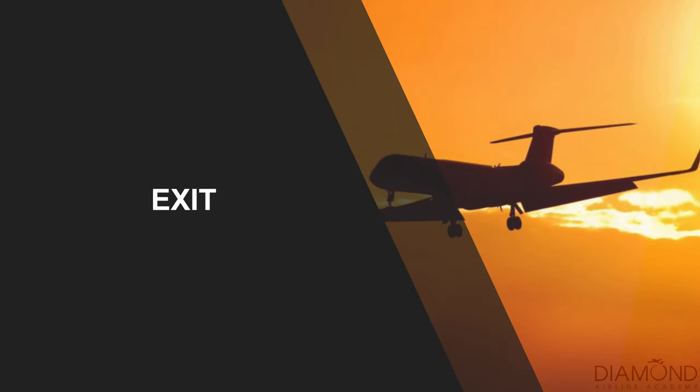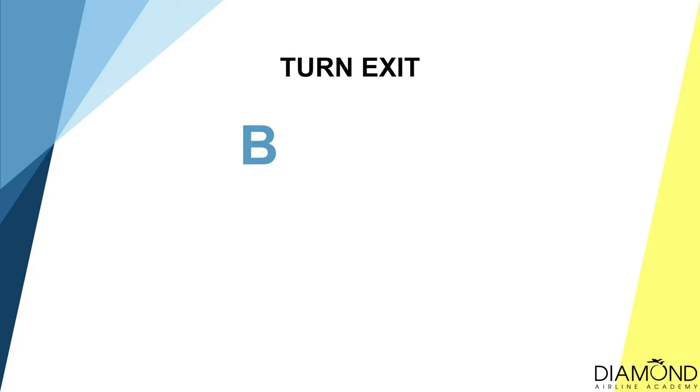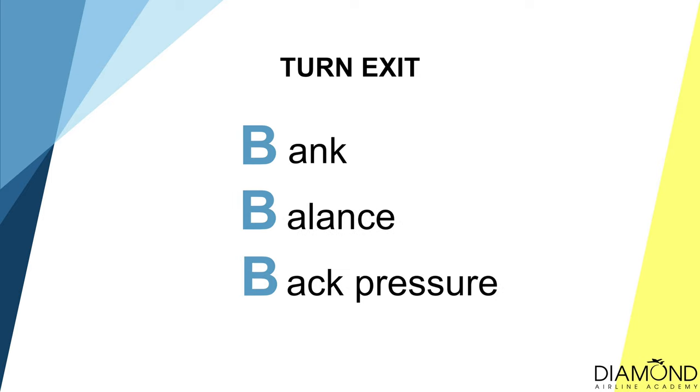If it looks like the aircraft will reach the nominated heading first, we perform the exit cycle for turning — B, B, B: Bank, Balance, Back Pressure — to stop turning while continuing to climb or descend to the nominated altitude.